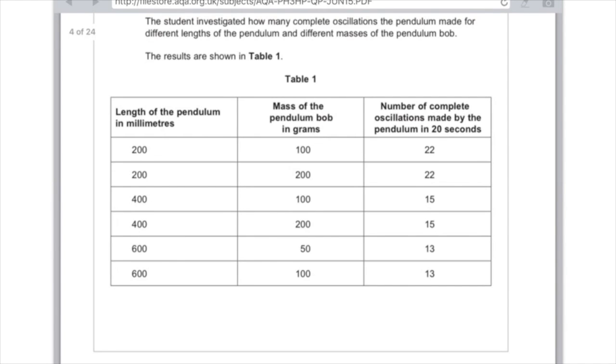We can see here that if you increase the length of the pendulum, then you decrease the number of oscillations, and you don't have to provide examples here, but let's just look and prove that that's right, because yes, the shorter the length, 200 millimetres, produces 22 oscillations, whereas if we increase the length of the pendulum to like 600, then we produce far fewer complete oscillations. Here only 13. And second of all, if we change the mass of the pendulum bob, it doesn't actually change the number of complete oscillations.